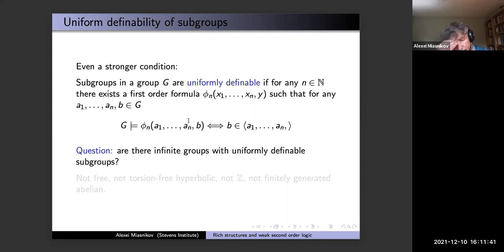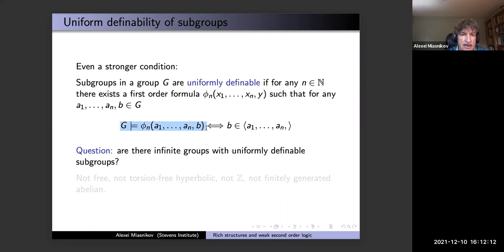But if you want to get to the absolute bottom, you ask: what groups have uniformly definable subgroups? It means for any n there exists a first-order formula φ_n in n+1 variables such that, given n+1 elements a_1, …, a_n, b, the formula holds in G on these elements if and only if the last component b belongs to the subgroup generated by the first n. This formula defines all n-generated subgroups in a uniform way. The infinite cyclic group does not have this property: there is one formula for the subgroup generated by 5 but a different one for 6.